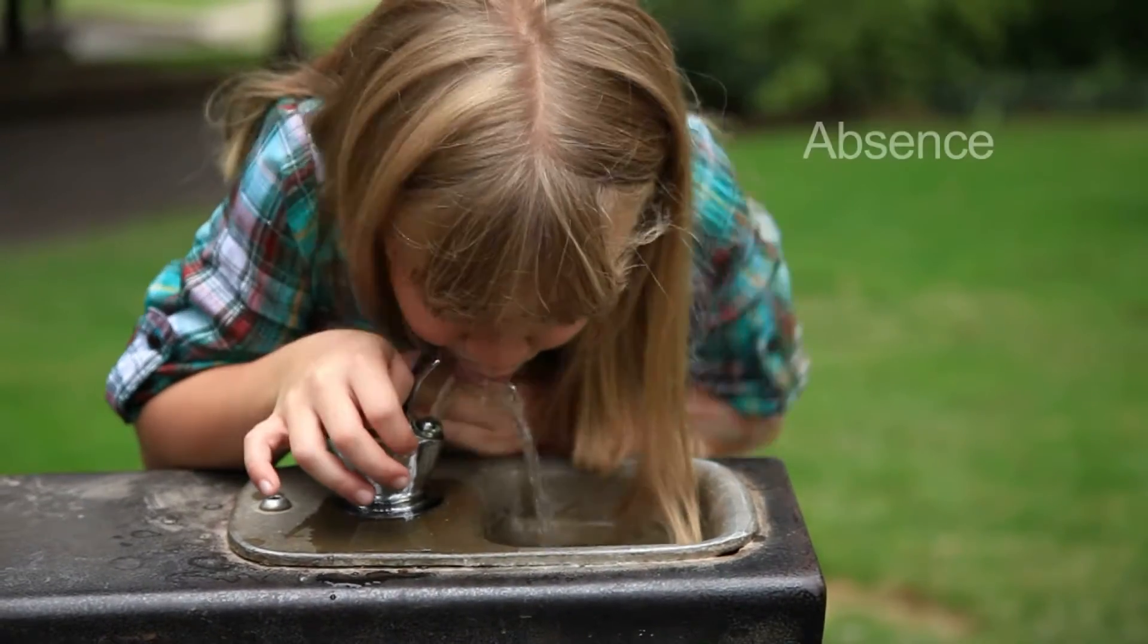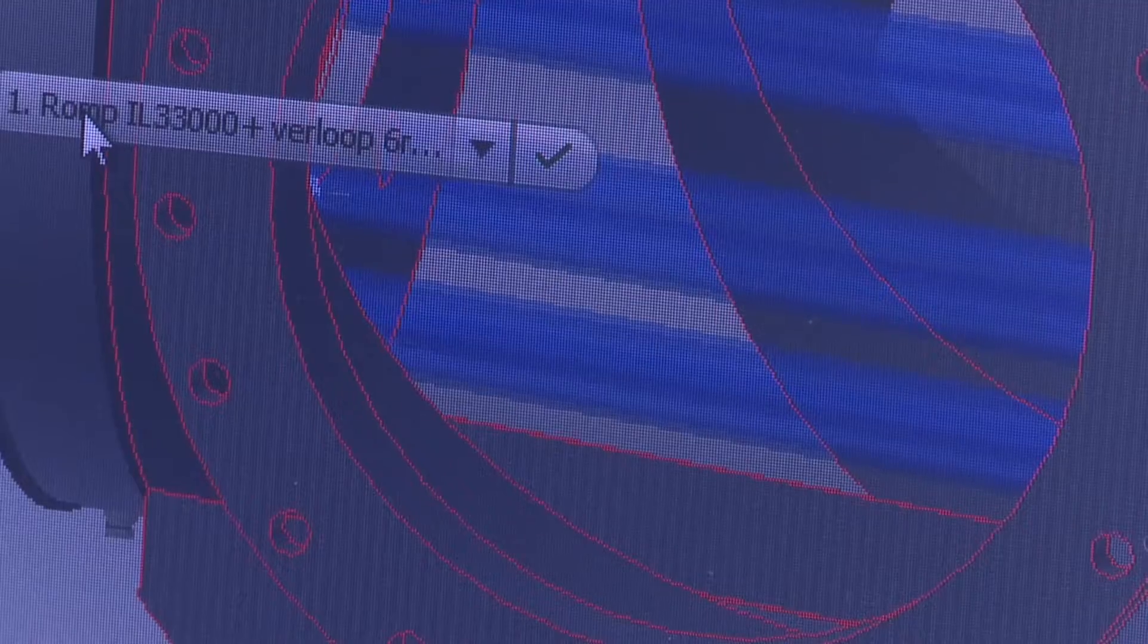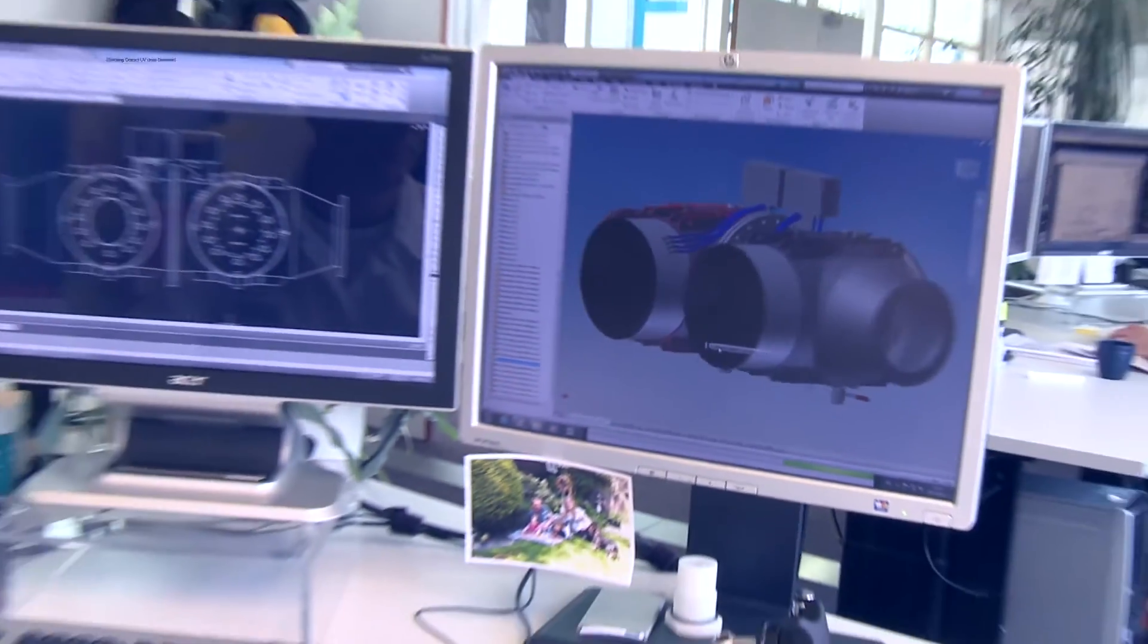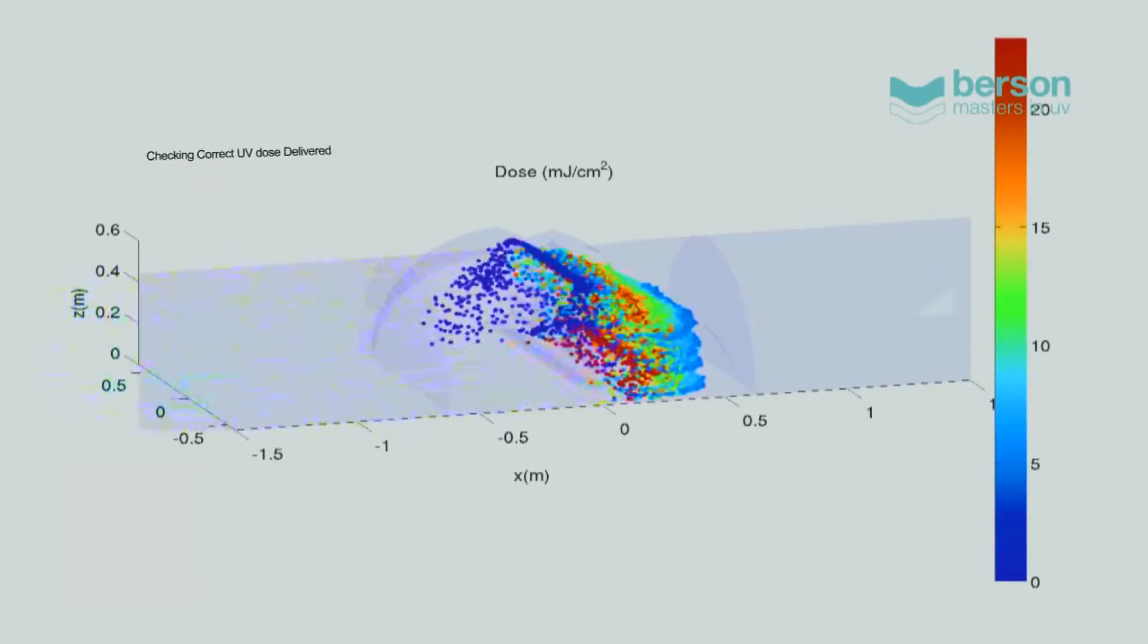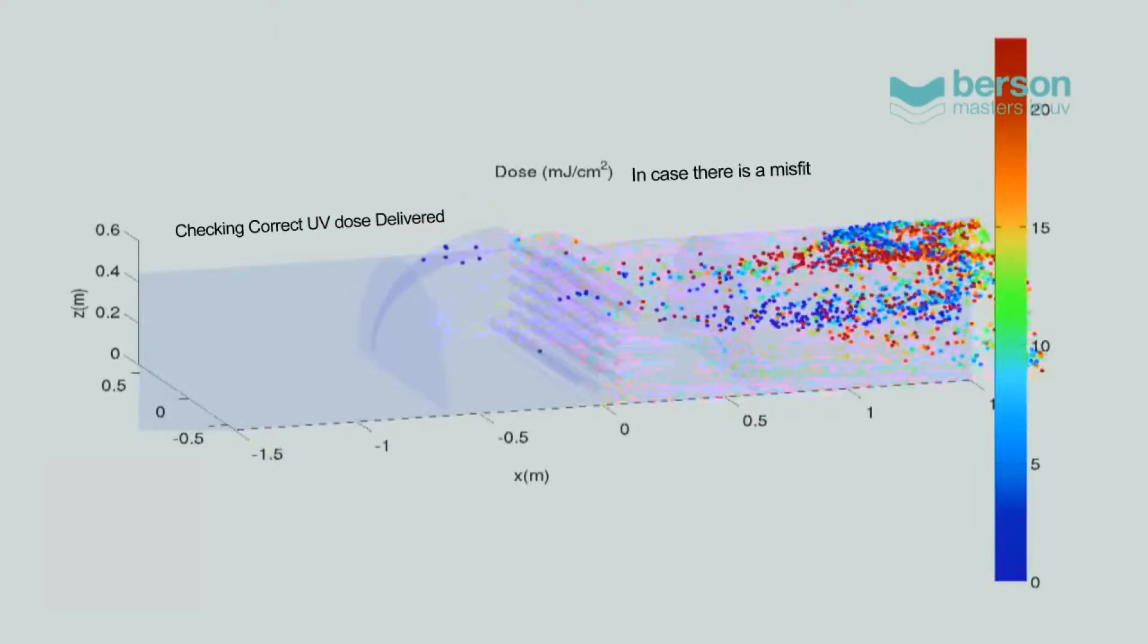A further advantage is the absence of taste and odour. Bursen specializes in UV safety solutions for municipal clients, catering for their specific requirements, such as checking that the correct UV dose is delivered and automatic action is taken in case there is a misfit.